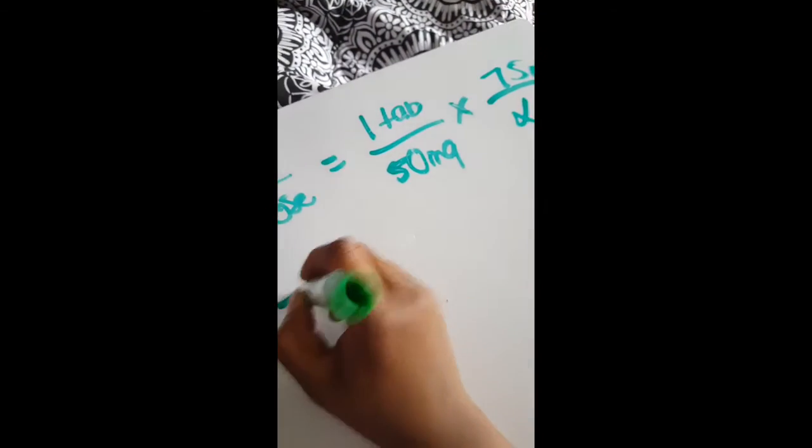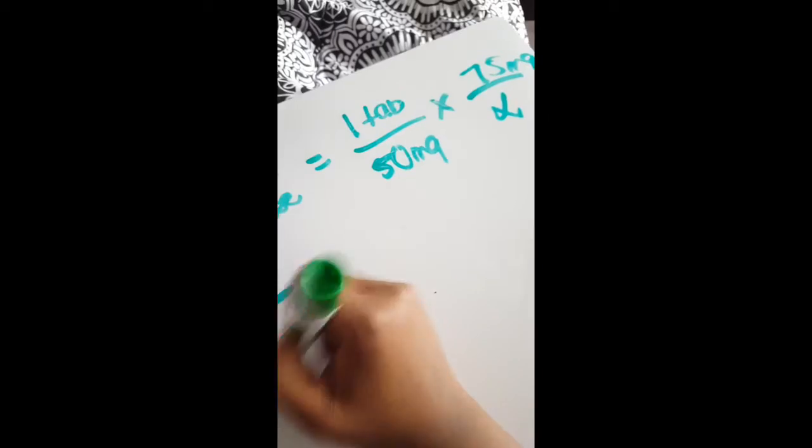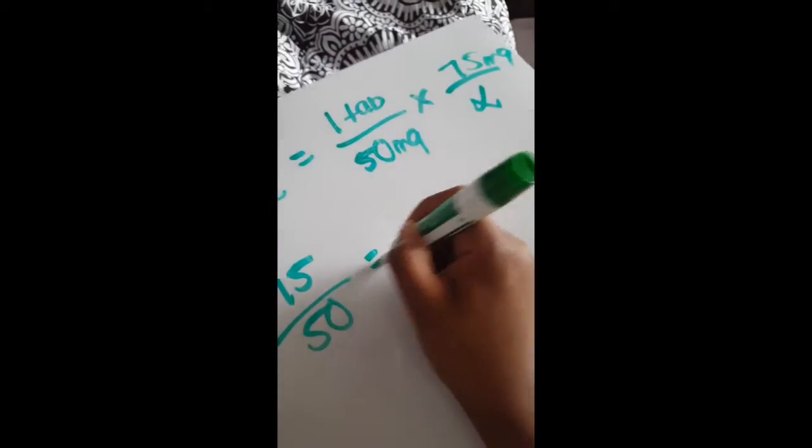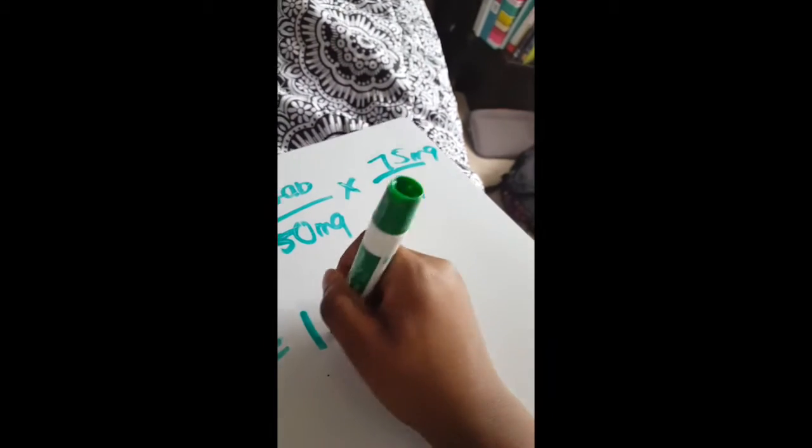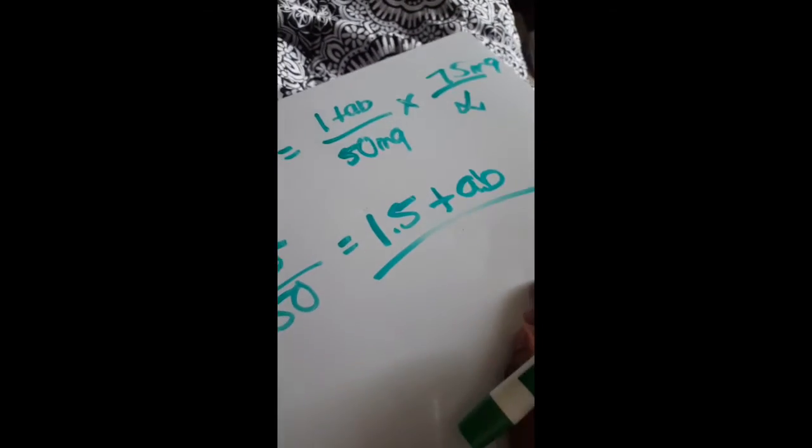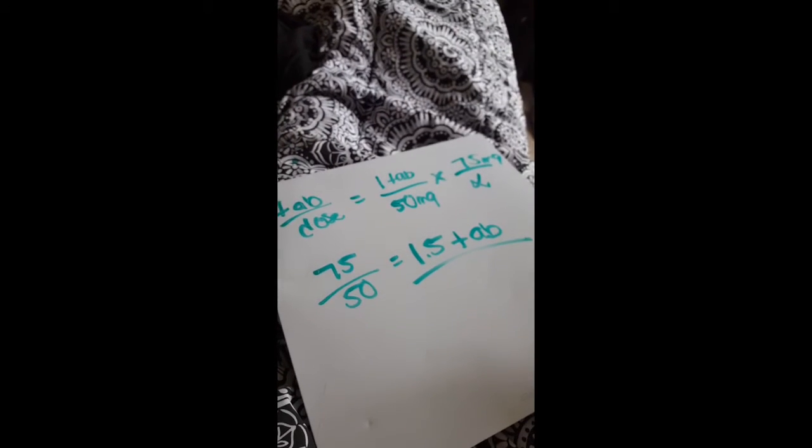So now write it out: 75 over 50. That gives one and a half tabs per dose. Don't forget to put your label. One and a half tab. Perfect.